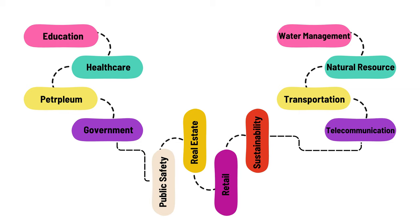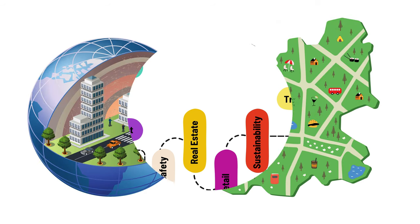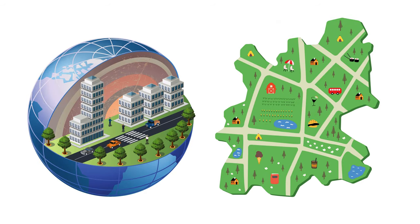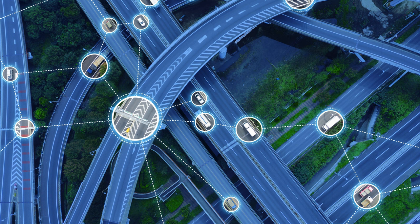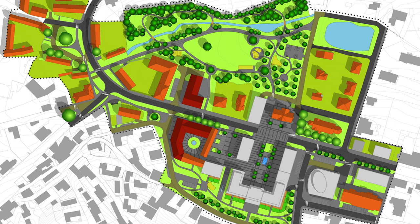Let's clarify this with an example. Imagine we're in the field of urban planning. Here, GIS helps us to analyze data on population density, traffic patterns, and land use. With this information, they can design more efficient transportation systems.